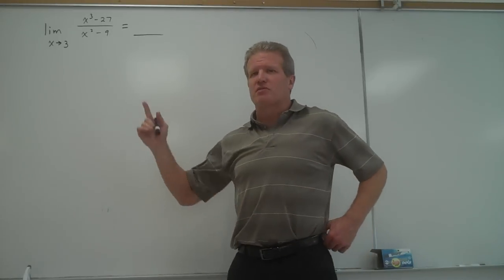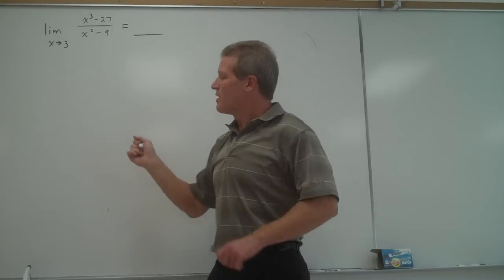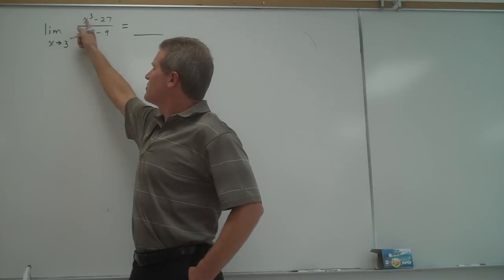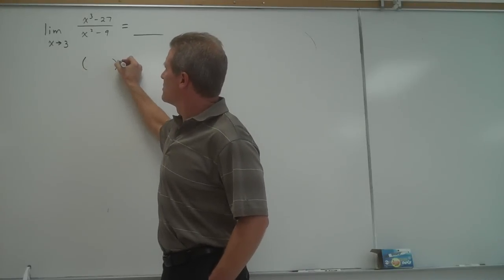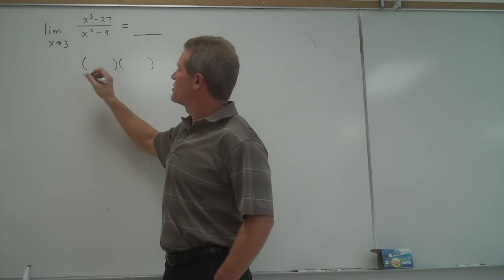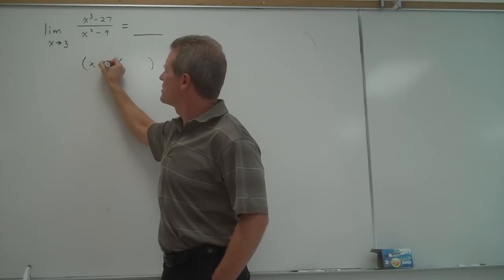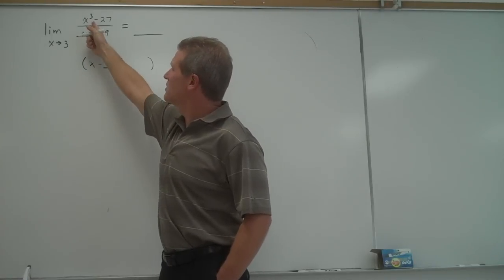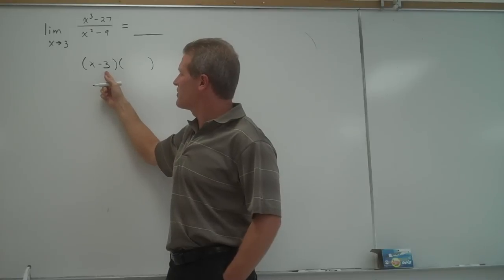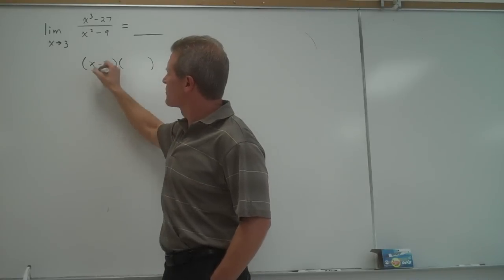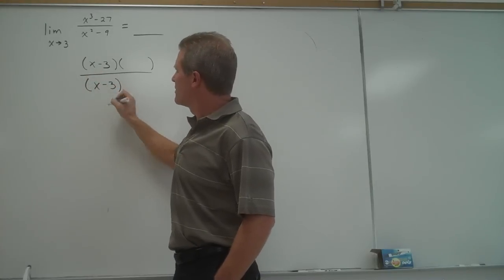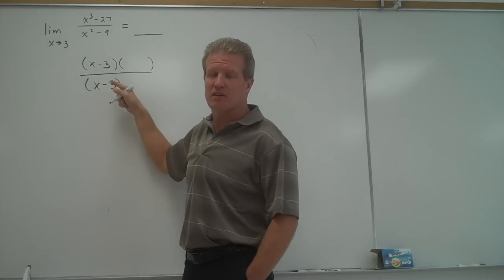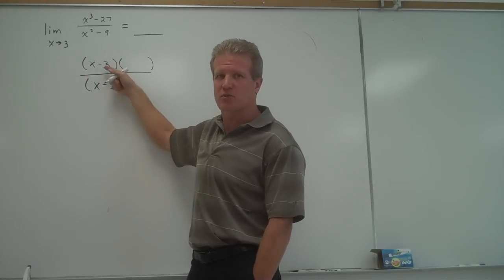So we need to somehow simplify this expression. If 3 makes the numerator and denominator 0, there's a reason for that. The reason is that one of the factors of the top expression has to be x minus 3. If I'm getting 0 in the numerator, there has to be a factor of x minus 3 in that numerator. If I'm getting 0 in the denominator, there also has to be a factor of x minus 3. That's the factor that's causing the numerator and denominator to come out to 0 over 0.